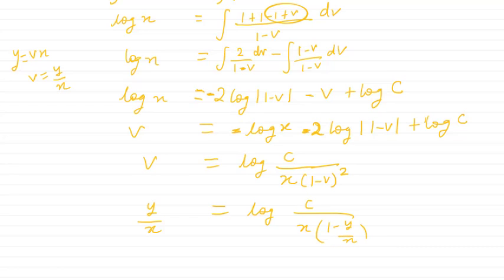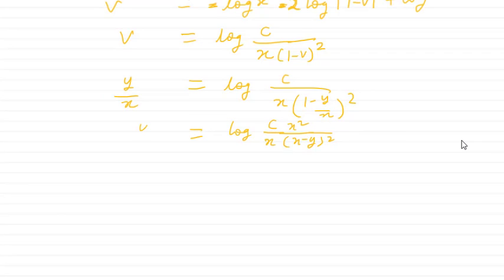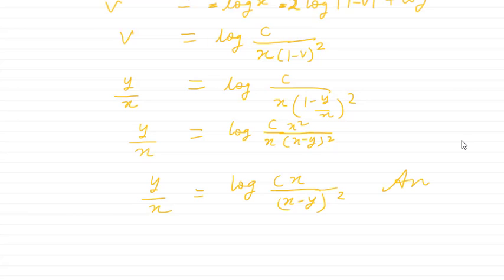Now substitute back v = y/x. We get v = log of c/[x·(1 − y/x)²], which simplifies to log of cx/(x − y)² after multiplying through. Further simplification gives y/x = log[cx/(x − y)²], or equivalently, e^(y/x) = cx/(x − y)². Either the second-to-last or the last line can be taken as the final answer.